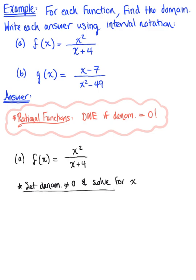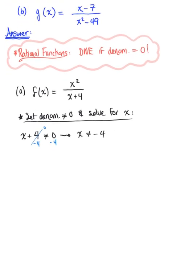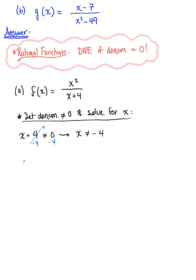We want to prevent the x values that are going to make our denominator zero. So x + 4 cannot be equal to zero. Subtracting 4 from both sides, the 4s cancel, and this tells us that x cannot be equal to negative 4. So we're ready to make a conclusion about this domain: x can be any real number except negative 4.